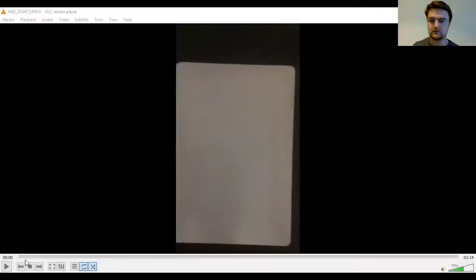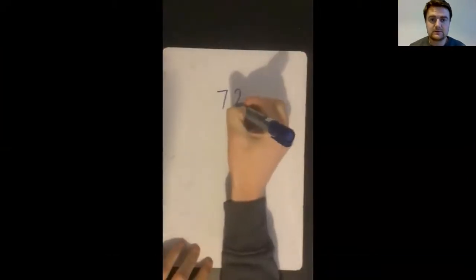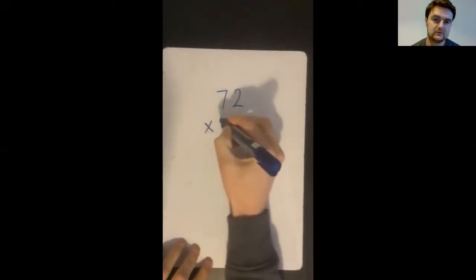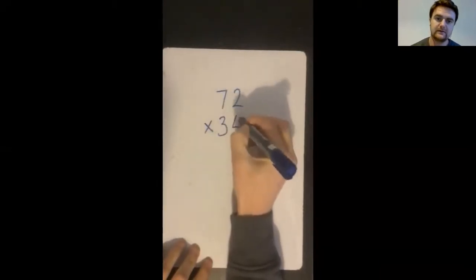So let me share my screen and I'll talk you through it as well. Okay. So here you can see, I'm going to write the sum out into the column method. So we've gone with 72 multiplied by 34.